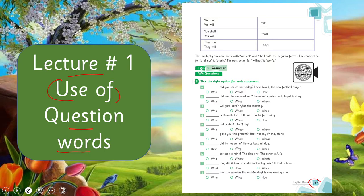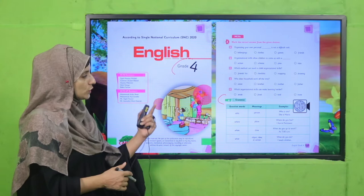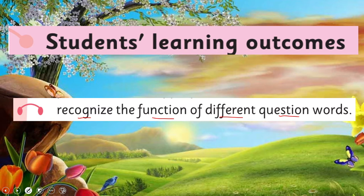Our today's lecture number one — we will learn about the use of question words and we will cover page number 137, question number five. My dear students, before this, in English for Grade 4, we already learned about question words — how and where we can use these words. Our today's Student Learning Outcome is: recognize the function of different question words.